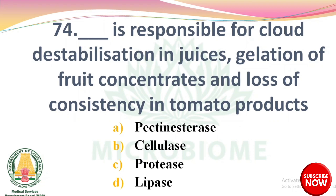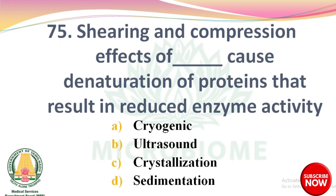Next question: dash is responsible for cloud destabilization, induces gelation of fruit concentrates, and loss of consistency in tomato products. Options: pectin esterase, cellulase, protease, lipase. The right answer is Option A: pectin esterase. Next question: shearing and compression effects of dash cause denaturation of proteins that result in reduced enzyme activity. Options: cryogenic, ultrasound, crystallization, sedimentation. The right answer is Option B: ultrasound.